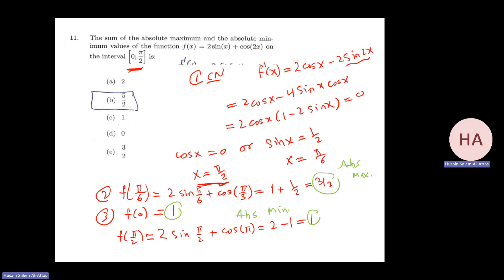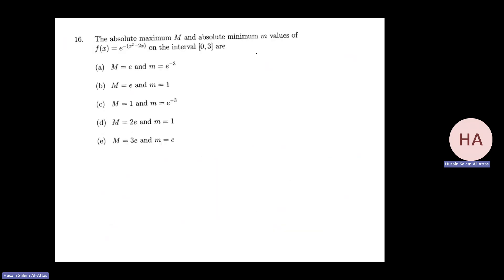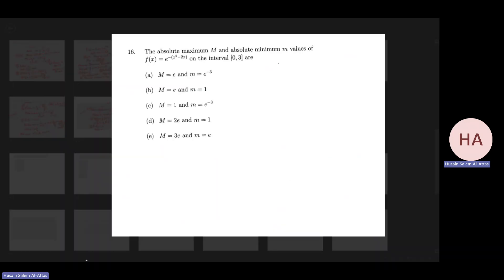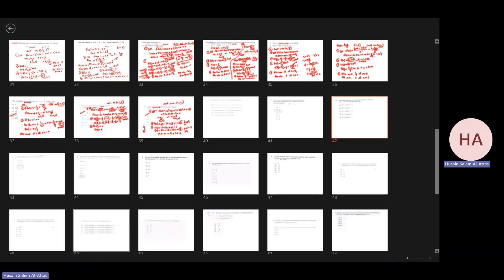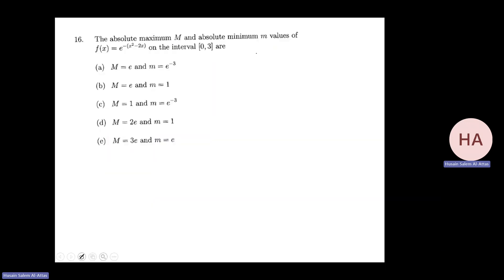The sum of the absolute maximum and absolute minimum is 1 plus 3/2, which gives 5/2.